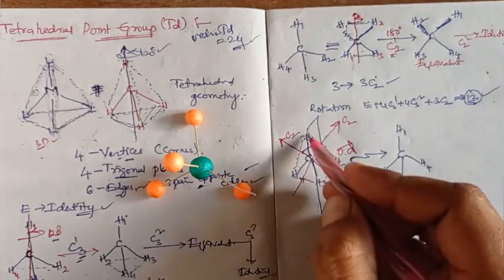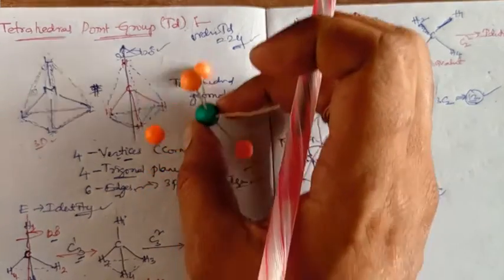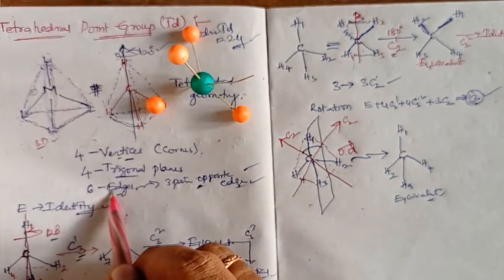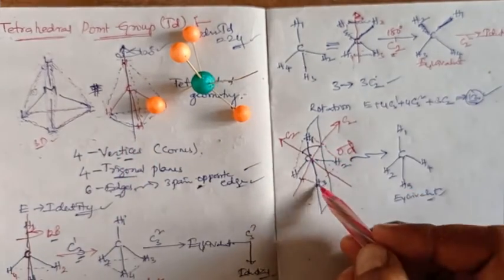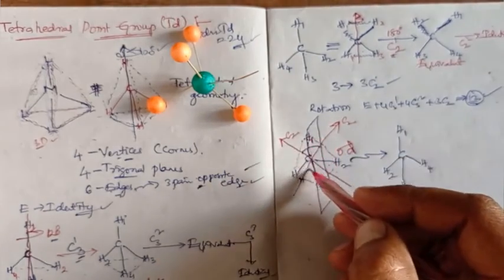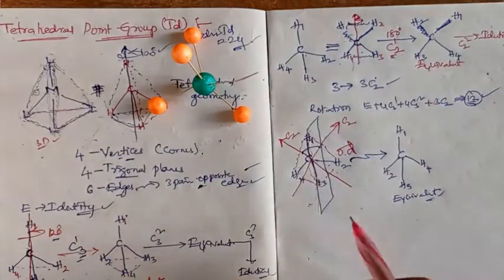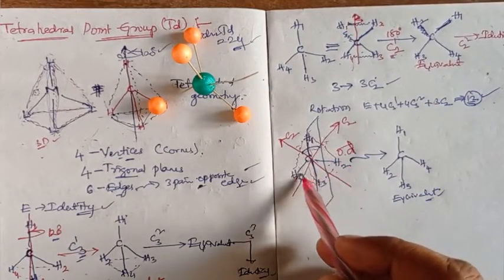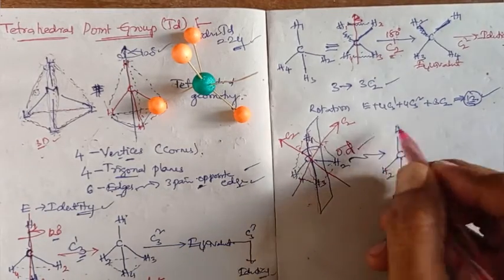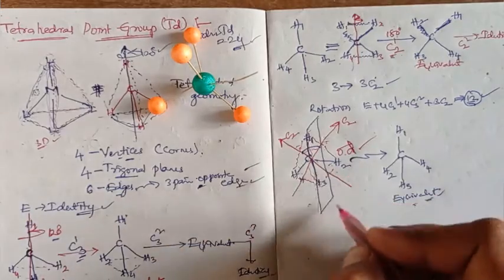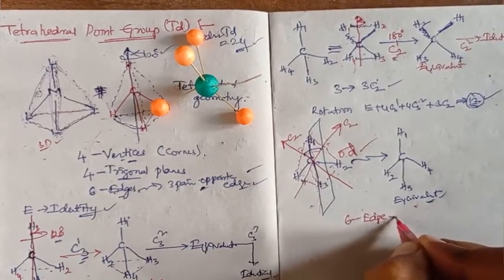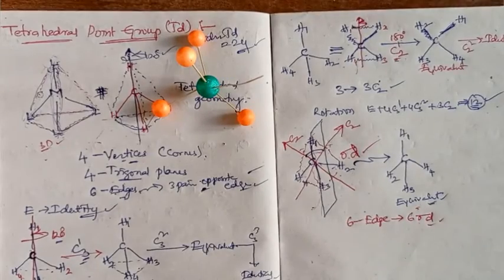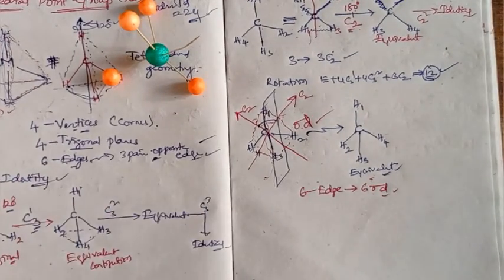Looking at this in terms of edges: the plane bisecting two consecutive C2 axes corresponds to one edge. Since there are six edges in total, there will be six dihedral planes. So the tetrahedral geometry has six dihedral planes (6σd).